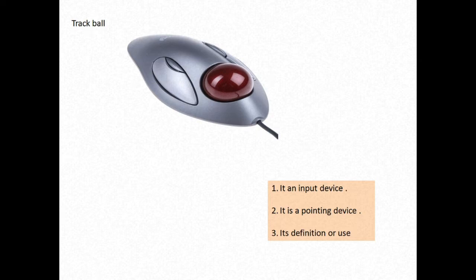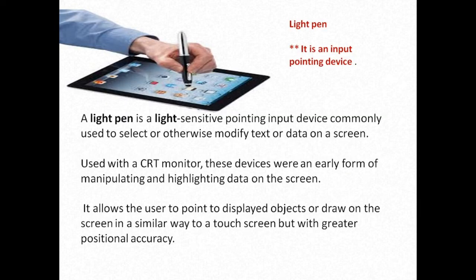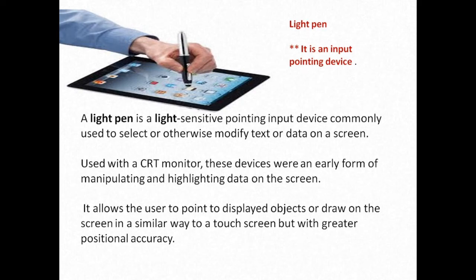The light pen is also called a stylus. It is also a pointing device, like a mouse. You can directly bring the pen in contact with the screen and it will sense that area. It is the same feature we use in our smartphones — we touch and we open. The same thing is done with the stylus.